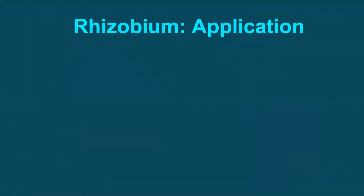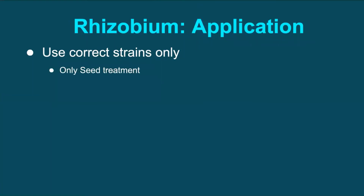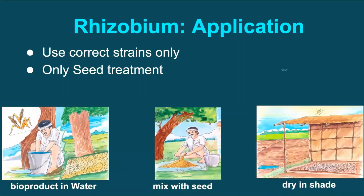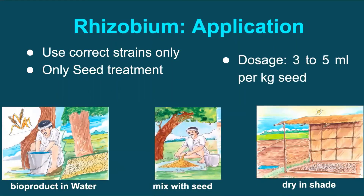As regards application, it is again mentioned that you should use only correct strains specific to the crop. Rhizobium should only be applied through seed treatment — details are available from the previous episode — and doses should strictly be as per the label claim, or a maximum of 3 to 5 ml or 5 to 10 gram per kg of seed.